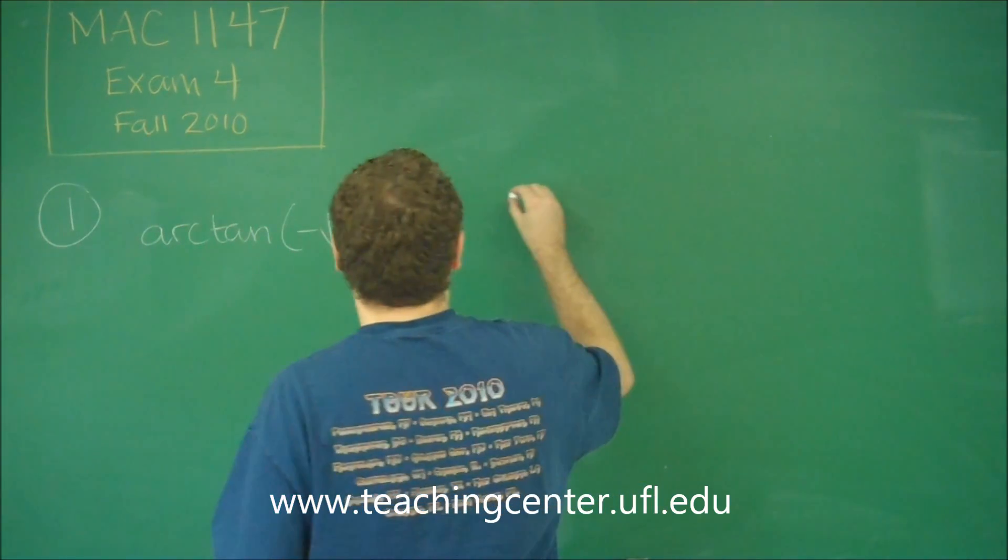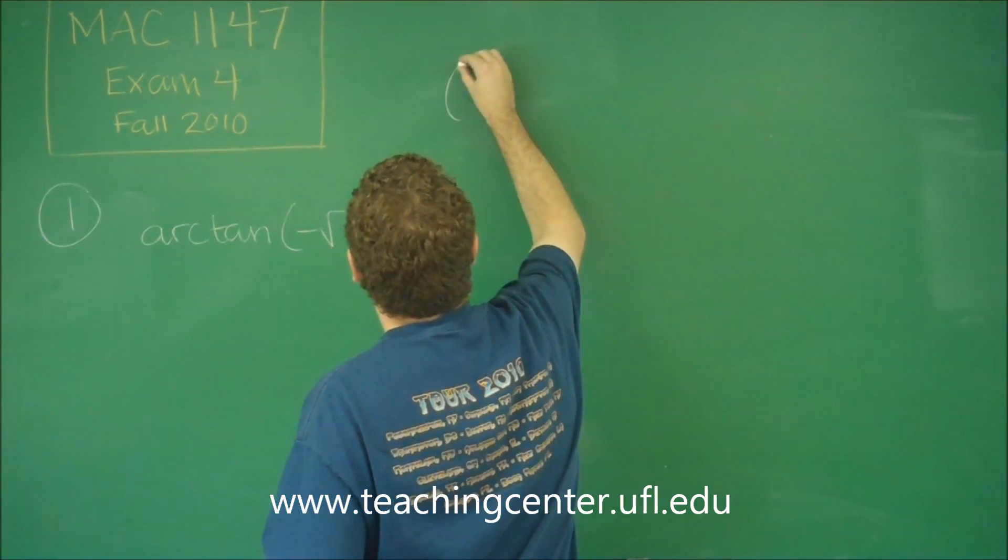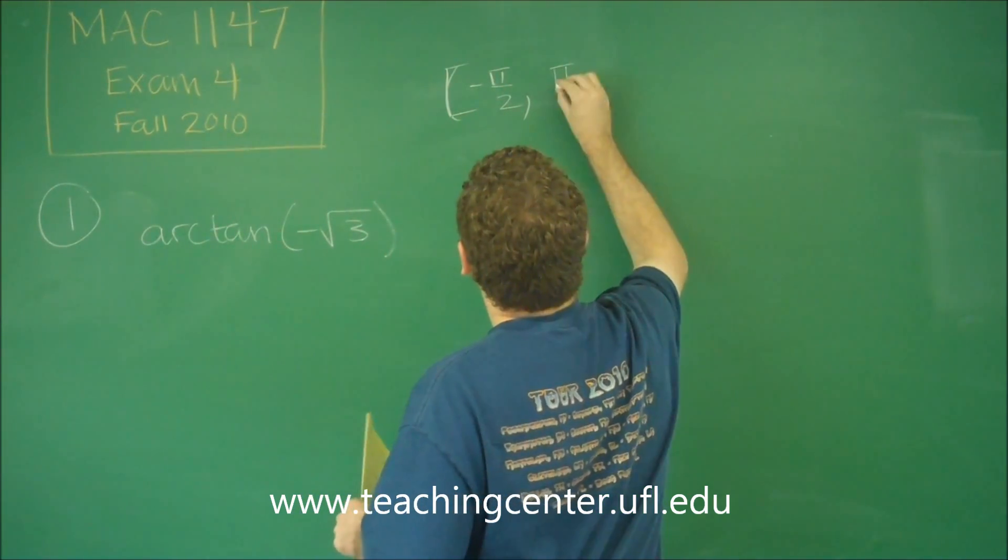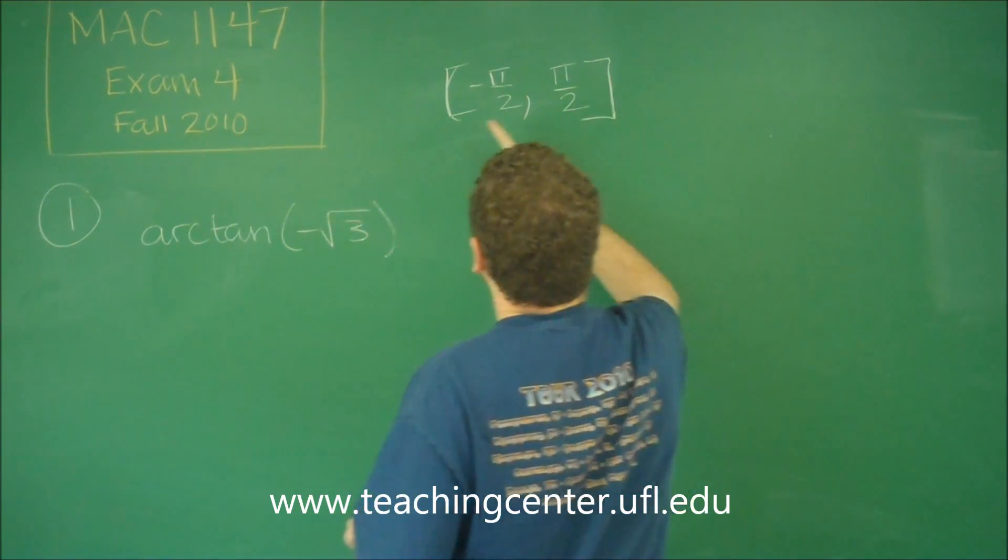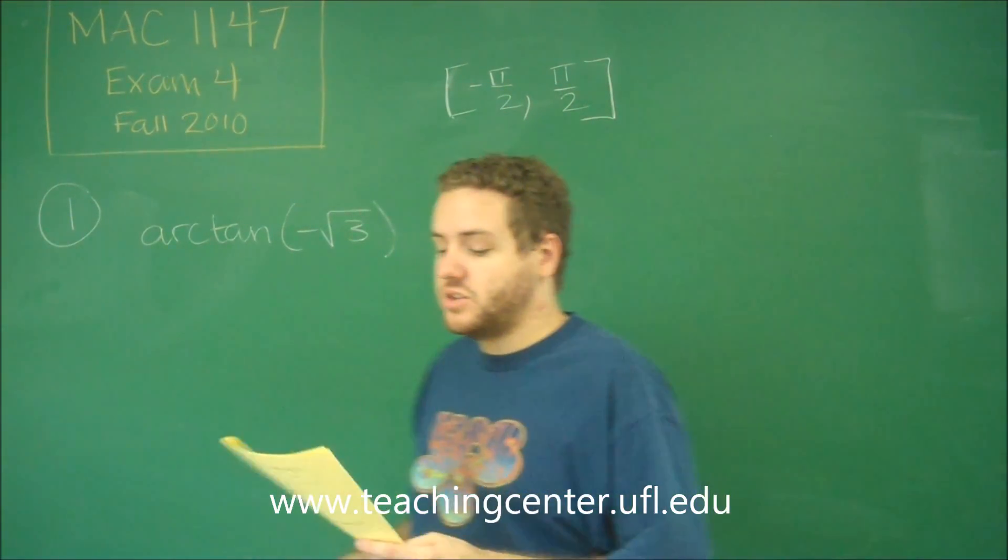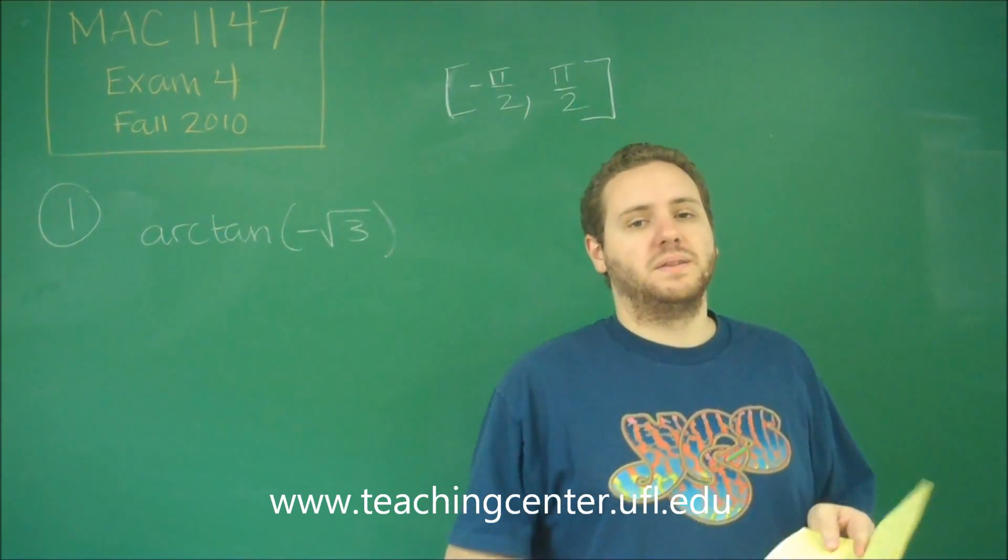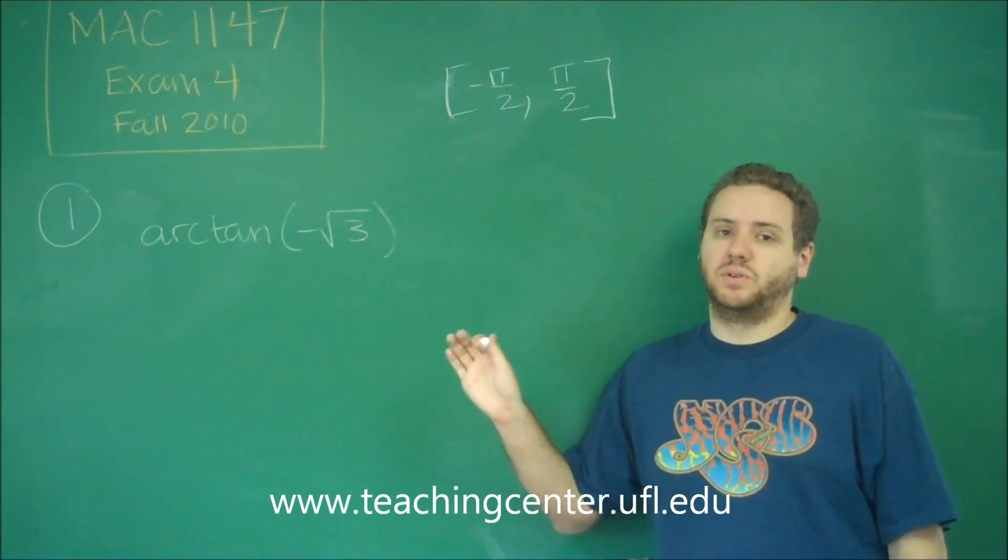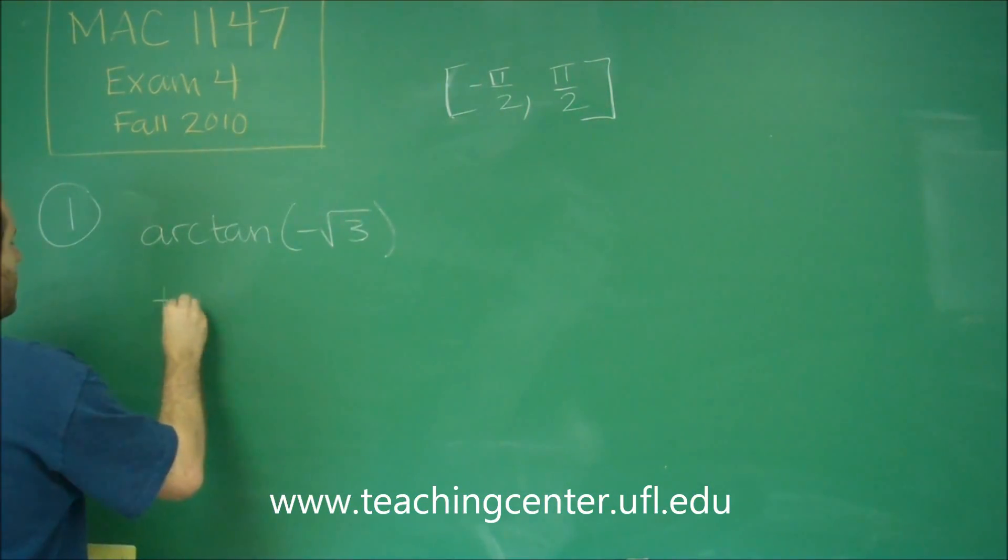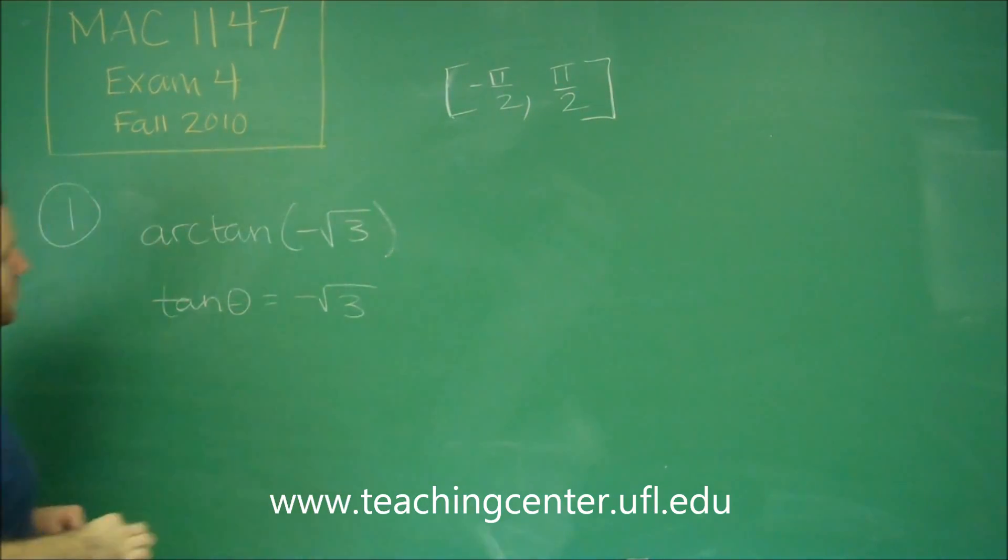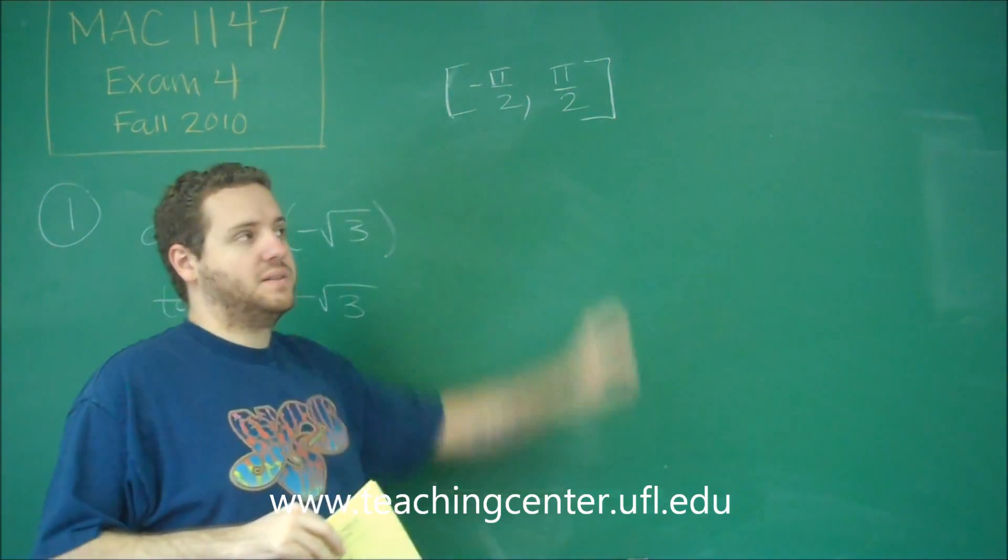So we know this has to be in the interval negative pi over two to pi over two. And those should be brackets there. So now let's figure out which one it is. The other way you can think about this is saying, tangent of what angle is equal to negative root three? This is an equivalent equation as long as you recognize that the answer to this has to be in this range.